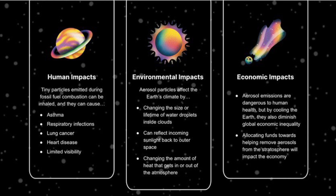In terms of environmental impacts, aerosol particles can affect the Earth's climate very largely, and they can do so by changing the size or lifetime of water droplets inside clouds. They can reflect incoming sunlight back to outer space — as shown in the 40-second video, it demonstrated both positively and negatively how that can affect the atmosphere. They can also change the amount of heat that gets in or out of the atmosphere, which can be both good and bad.